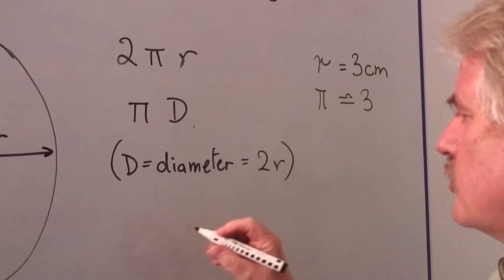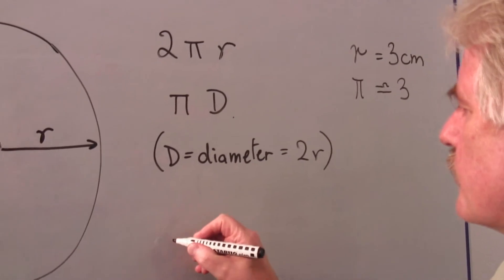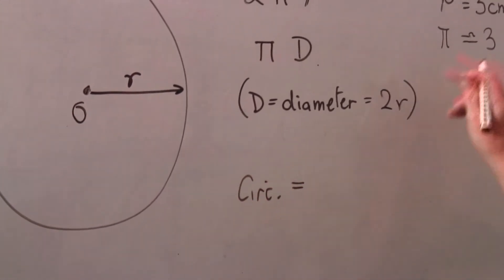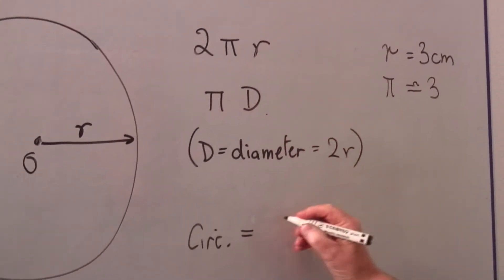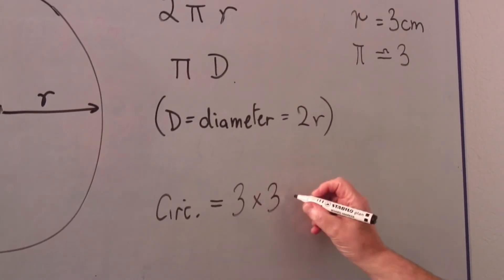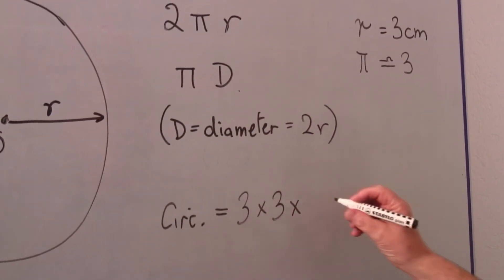Then we could do our calculation. We're looking for the circumference: the radius, three times pi, which is also approximately three, multiplied by two.